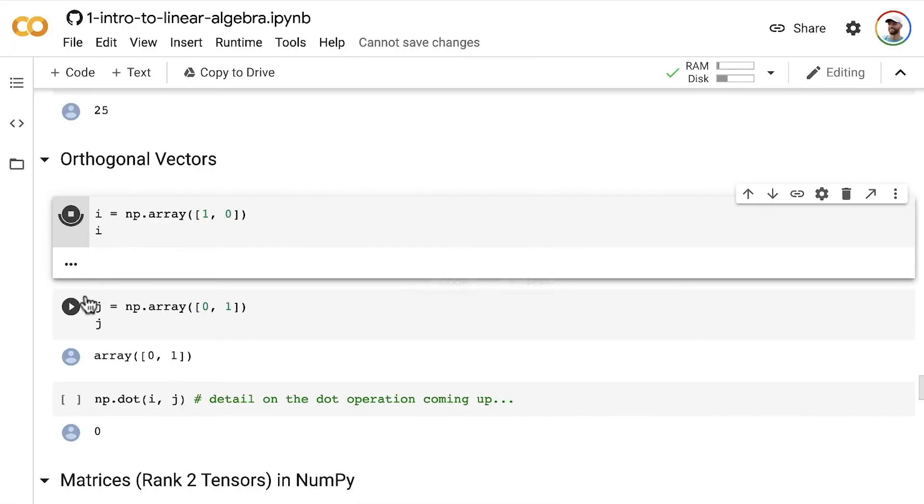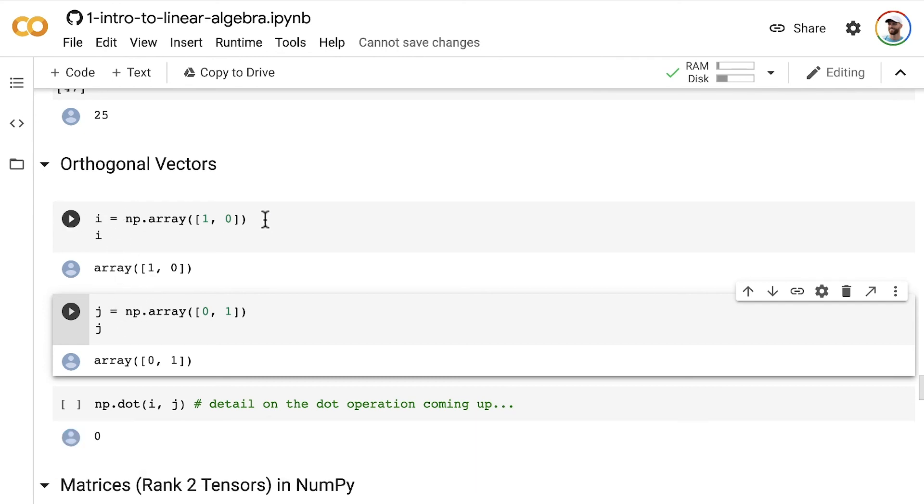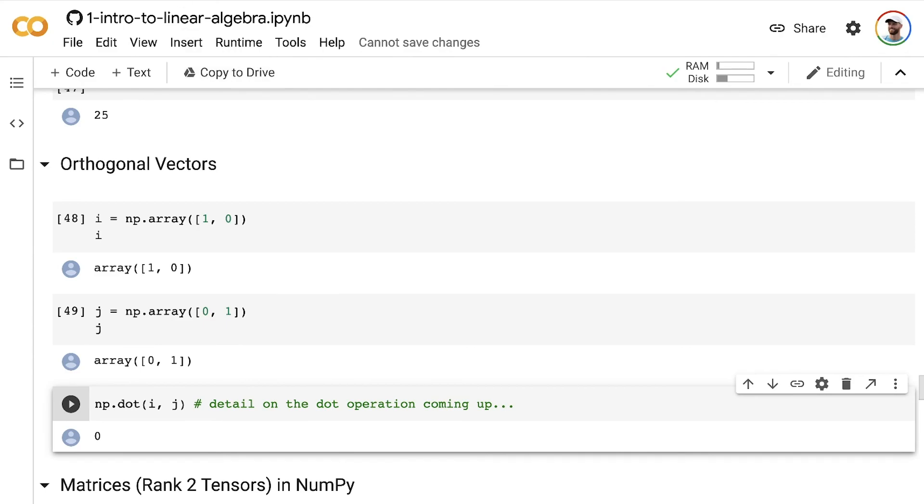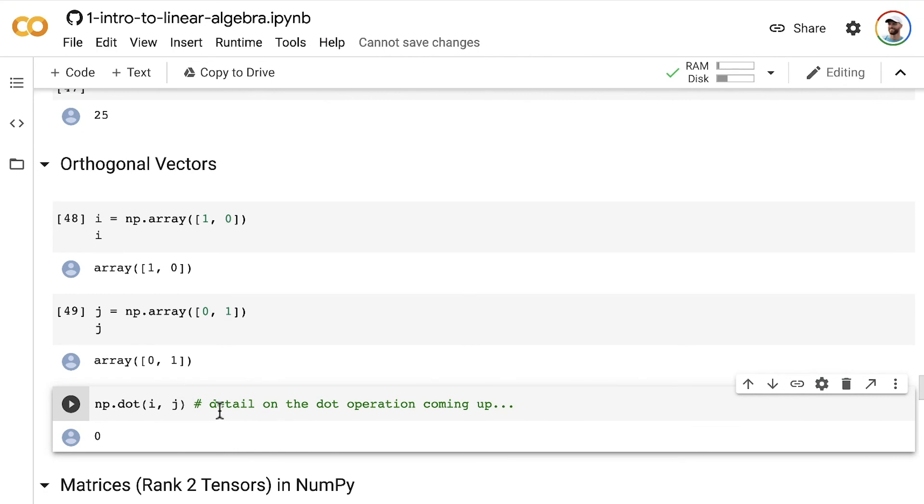So here are two vectors, i and j, that are exactly the vectors i and j from the slides. And when we take the dot product of them, the result comes out to zero. So that just kind of proves this point that I made here, although I haven't yet, if you've been following along with all the machine learning foundations videos, I haven't yet explained in detail what the dot product is. I will get into that in more detail shortly.